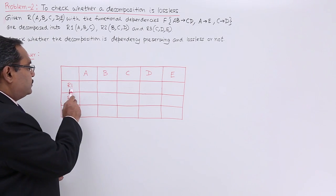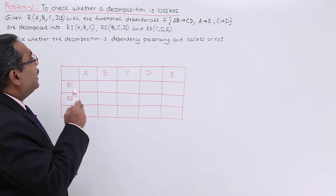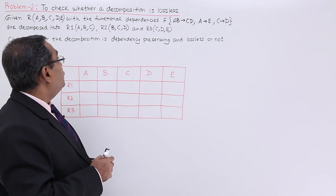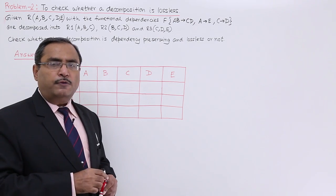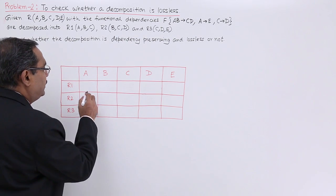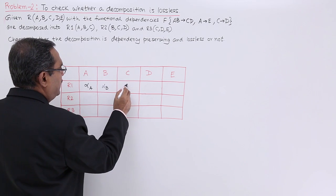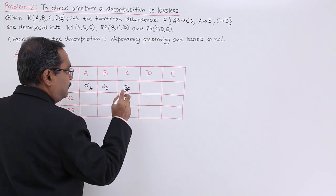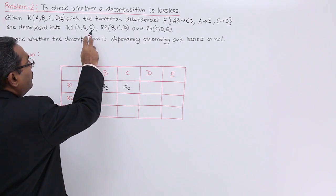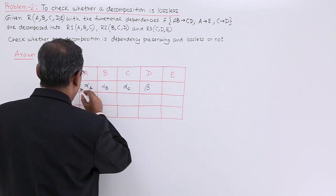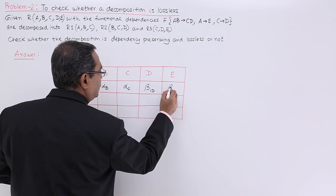If you consider R1, at first we are considering R1. R1 is having attributes A, B and C. As a result of that here for A, B and C column we shall be putting alpha. Alpha A, alpha B and alpha C. For D and E, as D and E are not participating in R1, we shall go for beta row number 1 column number D in this way.